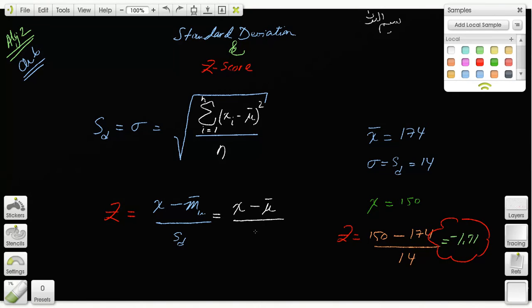Which is a particular x value, the individual particular value minus the mean, mu, over the standard deviation, or lowercase sigma like that.